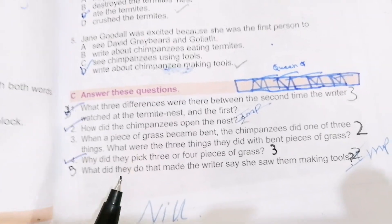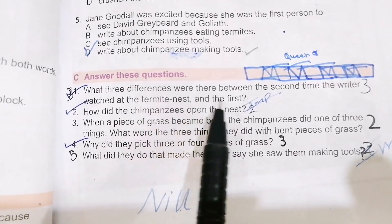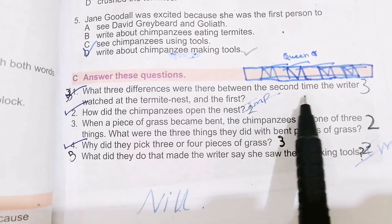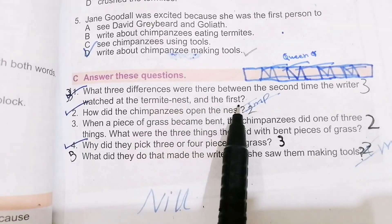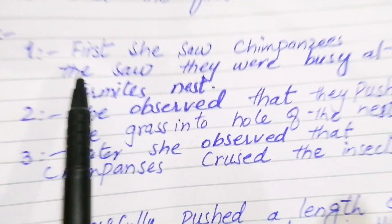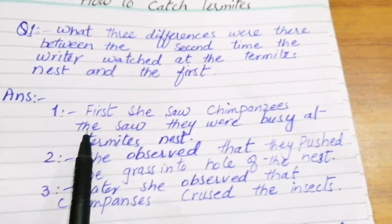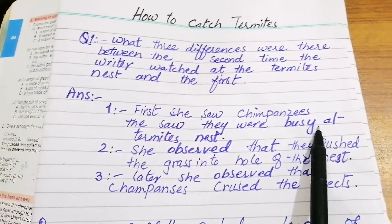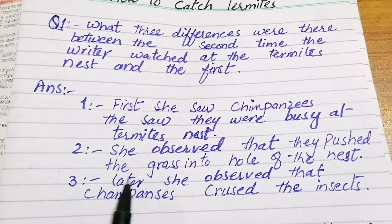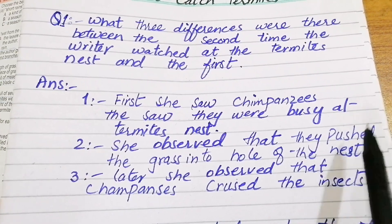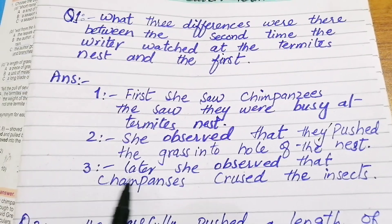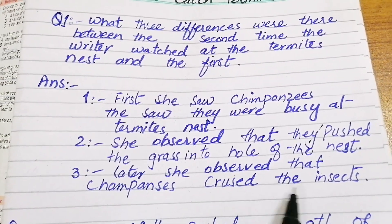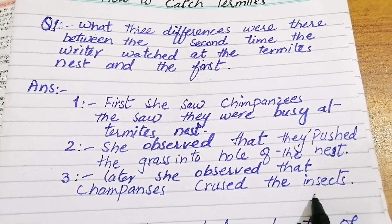Now let's come to the question answers. I will read the questions one by one and tell you the answers. Question one: what three differences were there between the second time the writer arrived at the termite nest and the first? The answer: first, she saw the chimpanzees and observed they were busy at the termite nest. Secondly, she observed that they pushed the grass into the hole of the nest.